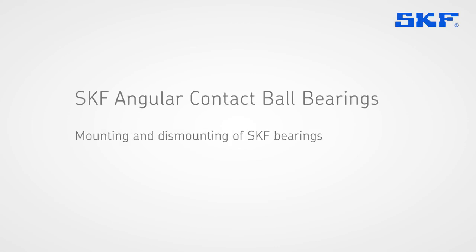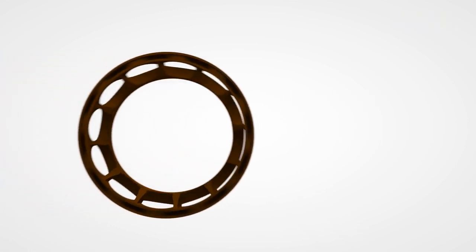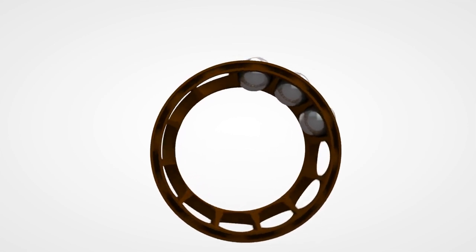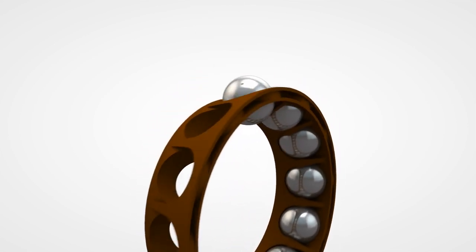This SKF training film is about single row angular contact ball bearings. An angular contact ball bearing consists of a retaining cage and a row of balls with an inner and outer ring.